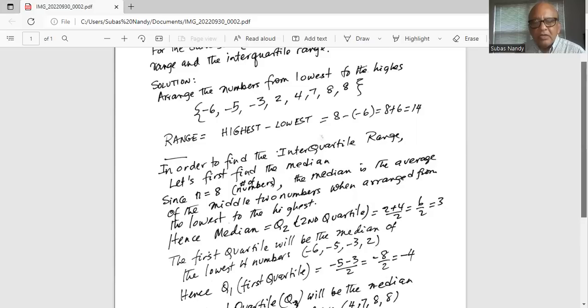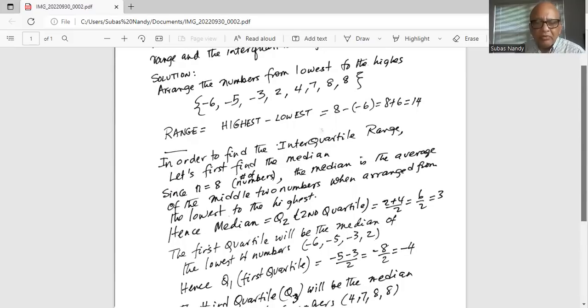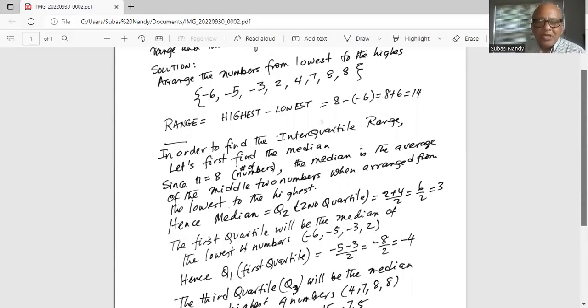Both are minus. We add them together and then keep the negative sign. So it is -8 divided by 2 is -4, is the first quartile. So it is the median of the first four numbers, or the lowest four numbers.